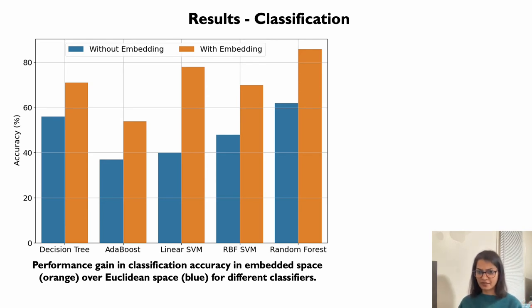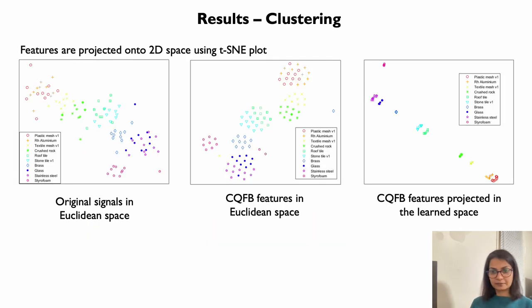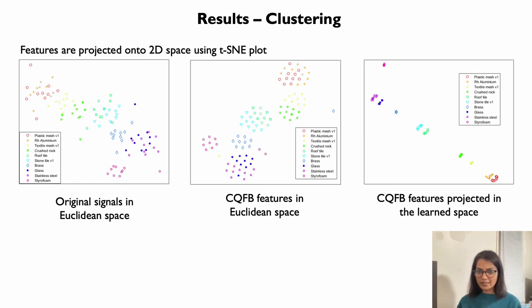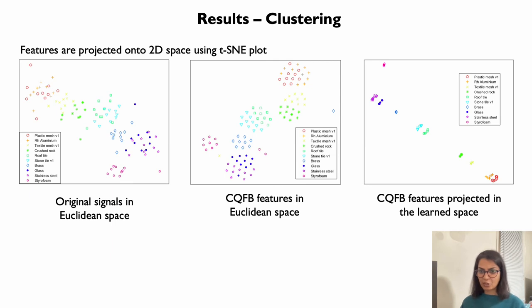The figure shows the performance improvement by the learned distance metric over the baseline Euclidean distance metric for different classifiers. As we can see, there is a significant improvement in the classification performance with the boosting embedding technique. We visualize the learned space using a t-SNE plot.